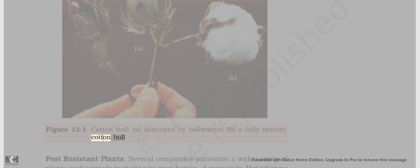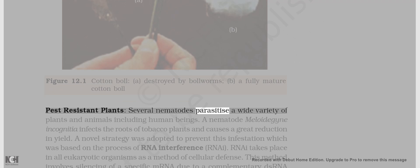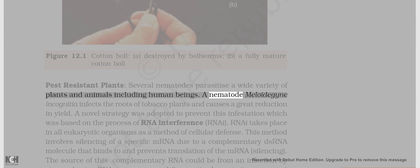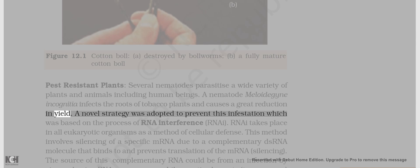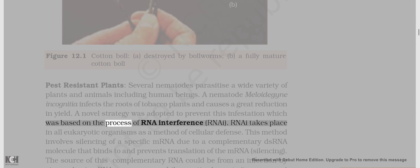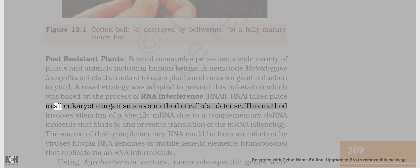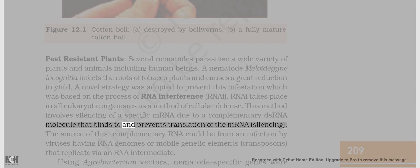Several nematodes parasite a wide variety of plants and animals including human beings. A nematode Meloidogyne incognita infects the roots of tobacco plants and causes a great reduction in yield. A novel strategy was adopted to prevent this infestation which was based on the process of RNA interference, RNAi. RNAi takes place in all eukaryotic organisms as a method of cellular defense. This method involves silencing of a specific mRNA due to a complementary dsRNA molecule that binds to and prevents translation of the mRNA.